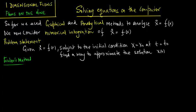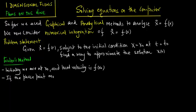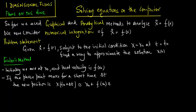Let's outline Euler's method. Initially we are at x naught and the local velocity is f of x naught. If the phase point moves for a short time delta t, the new position is x of t naught plus delta t, approximately equal to x naught plus f of x naught times delta t, which we call x1.